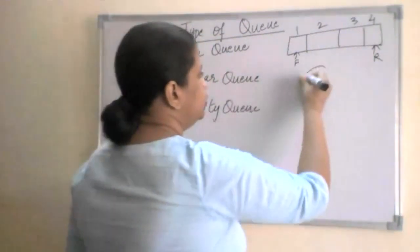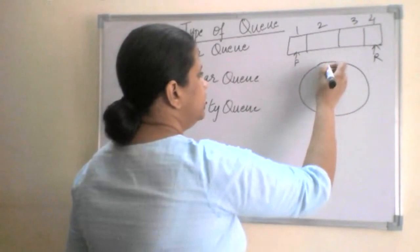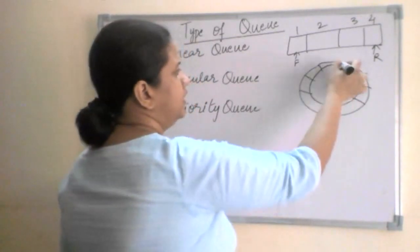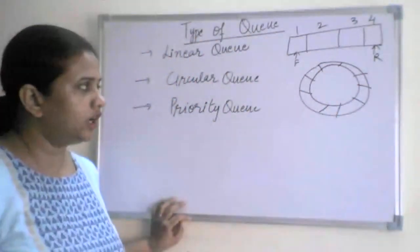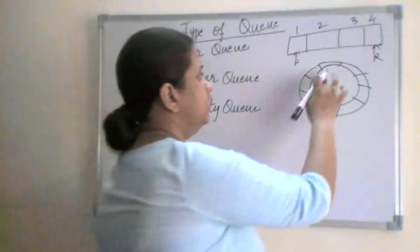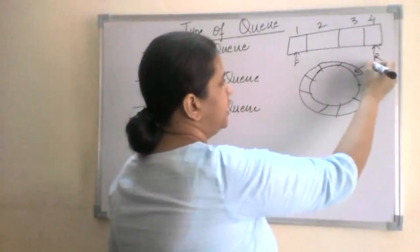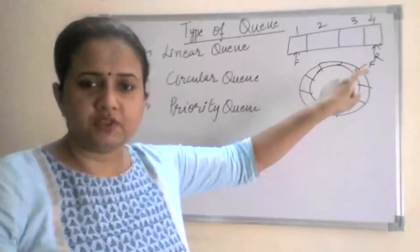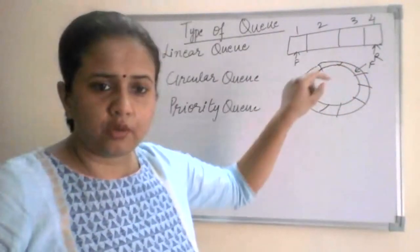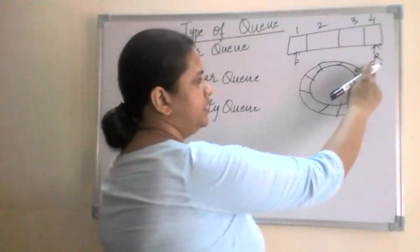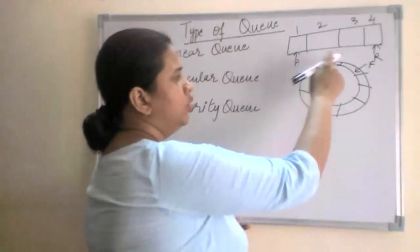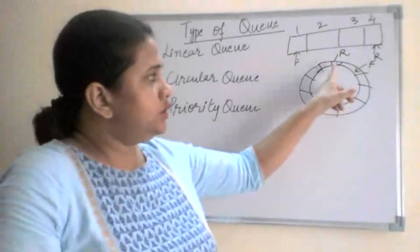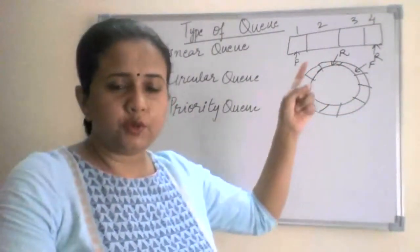Now let's talk about the circular queue. In practicality it won't look like this, but to represent it in a better manner I've used it in the form of a ring. Here F represents the front — this is the place from where you start inserting data. So the first element, second, third, fourth, fifth, sixth, and so on — and the last position will be rear.